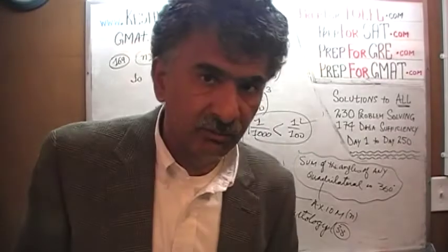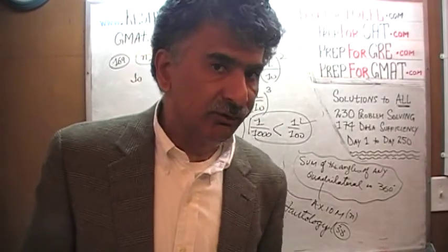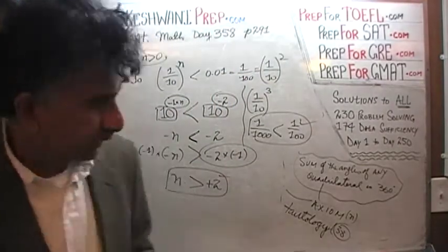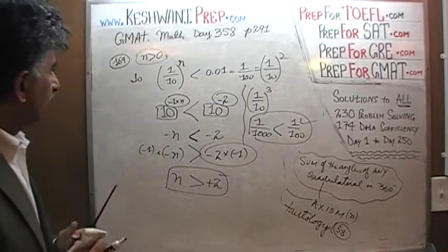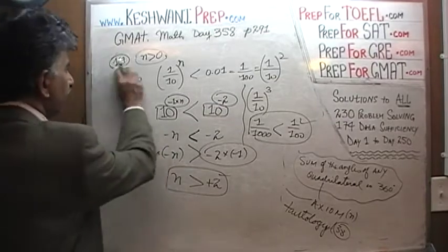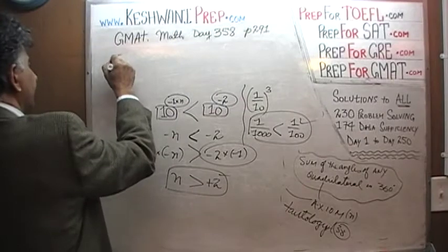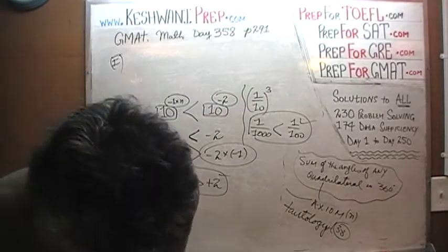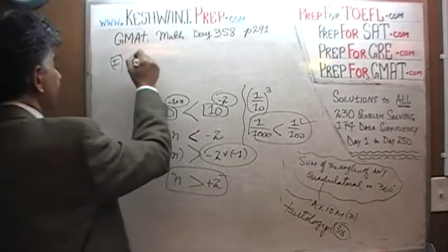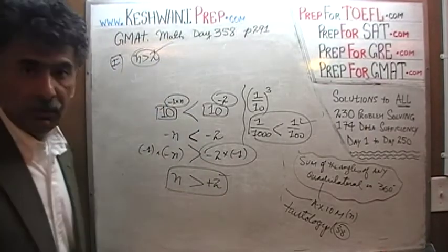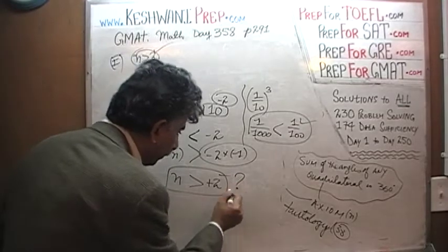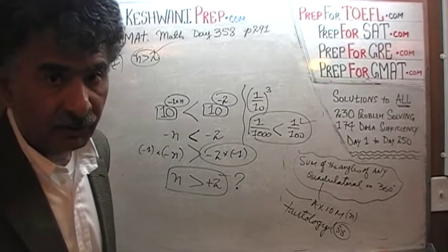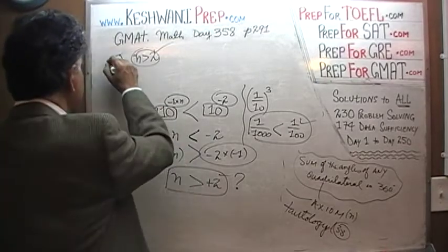Now we are ready to look at the two statements. We just have to have sufficient data to ascertain that N is in fact more than 2. In the first statement, they tell you that N is more than 2. Then you're done — that's it. The question is whether N is more than 2, and the first statement answers exactly that. First statement does the job.